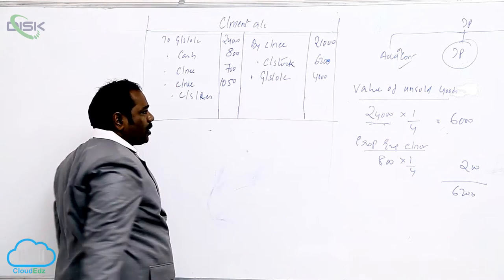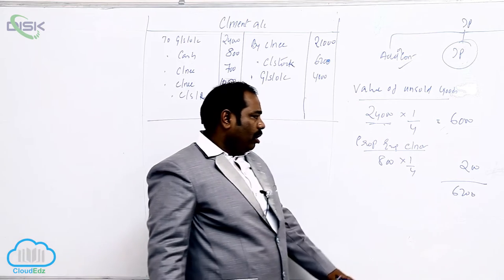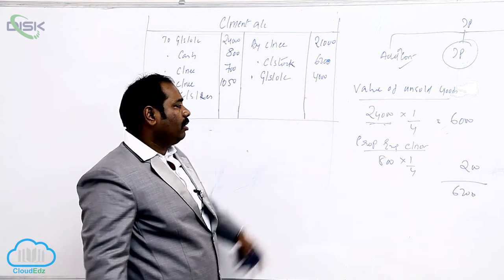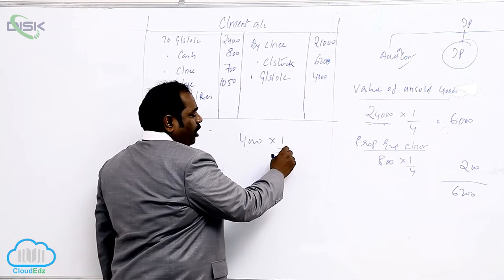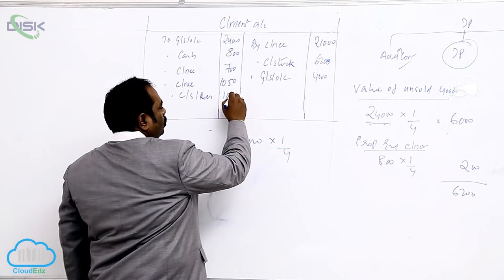Because this was valued at invoice price, this has to be unloaded. What is the extra price we are adding? We are adding 4,000, the extra price we have added. On that you calculate one-fourth, that is 1,000.